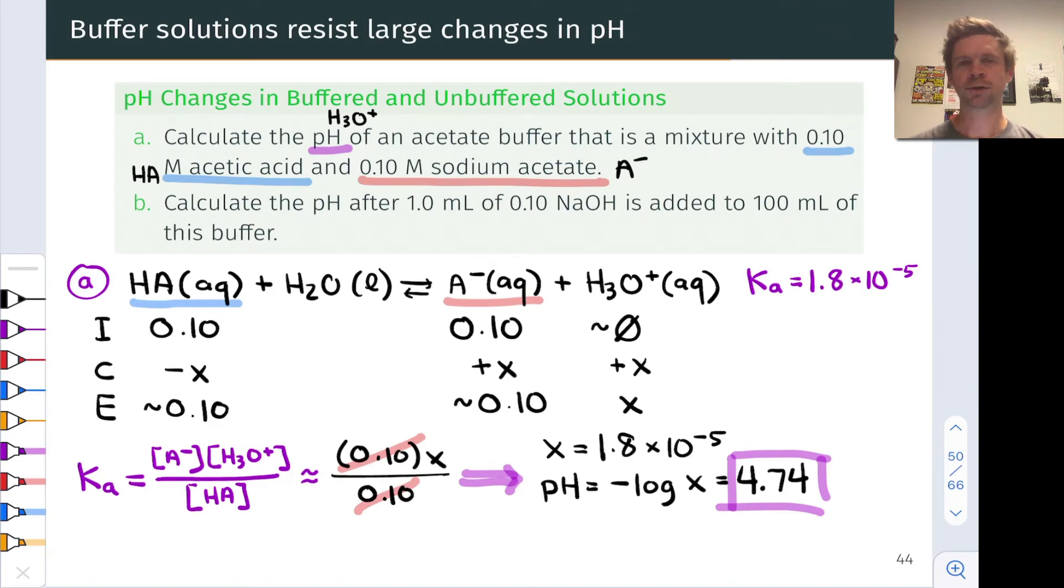In this video, we're going to reveal an equation that makes it very easy to calculate the pH of a buffer system, provided we're in that buffer region with the ratio of conjugate acid to conjugate base between 0.1 and 10.